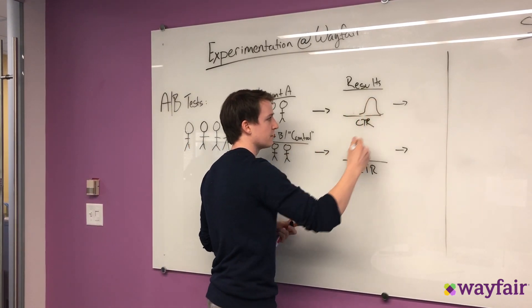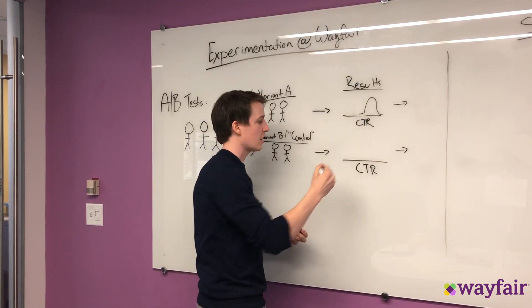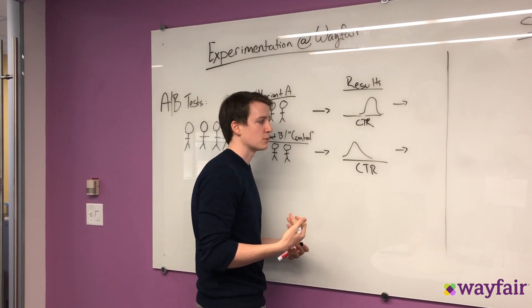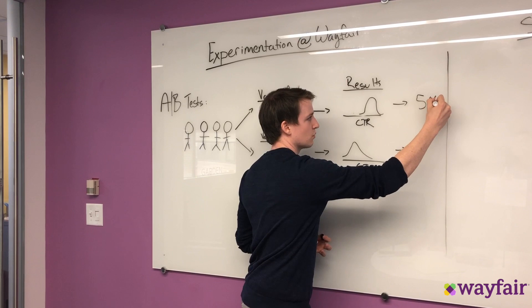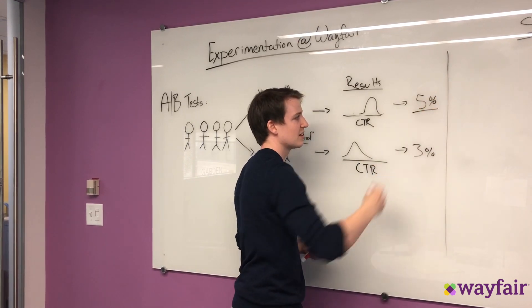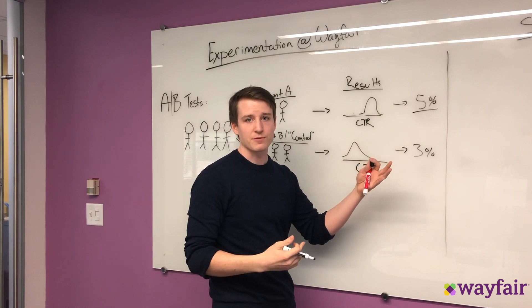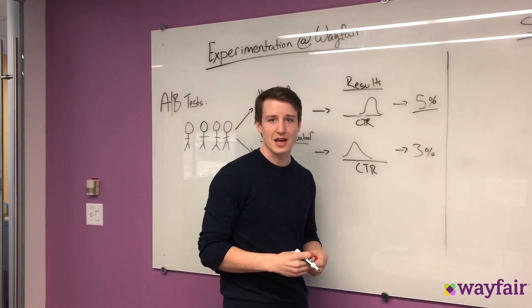And so then that allows you to be able to see the distribution of your outcome variable of interest. Let's say it's the click-through rates. And then you can compare these two distributions, see if they're statistically different, and then be able to assess which version is better. So in this case, the model A is outperforming model B. So therefore, we would want to run with model A in the future.